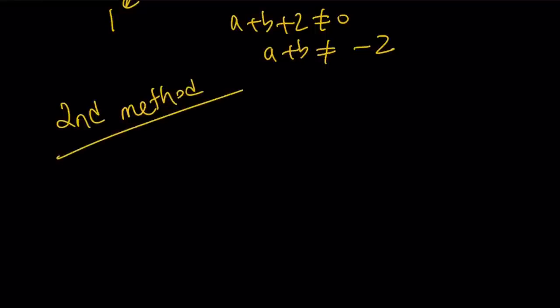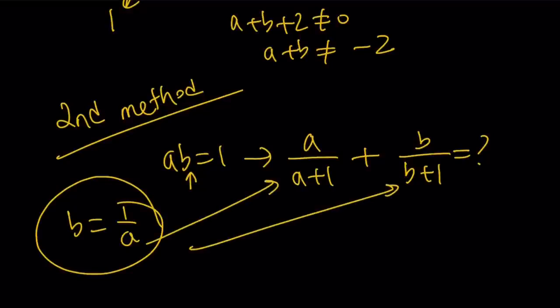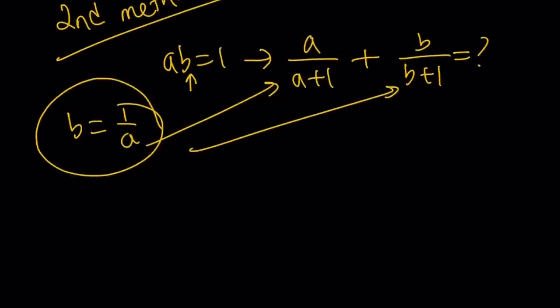The second method involves the following. I'm going to rewrite the problem so you can see the original. We have ab equals 1, and we're supposed to simplify this expression. So for my second method, I'm going to isolate b. b is equal to 1 over a. Since none of them can be 0, I can write b as 1 over a. And then substitute that here. So let's see what we get from here.